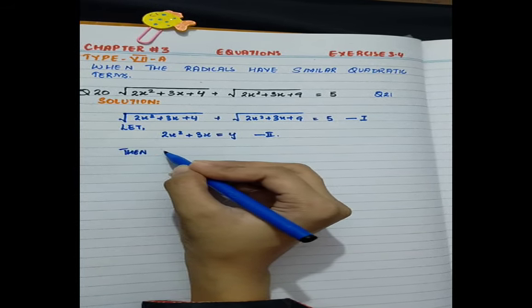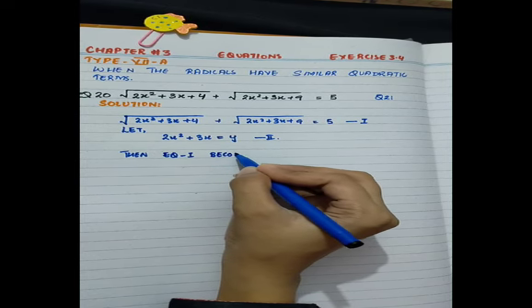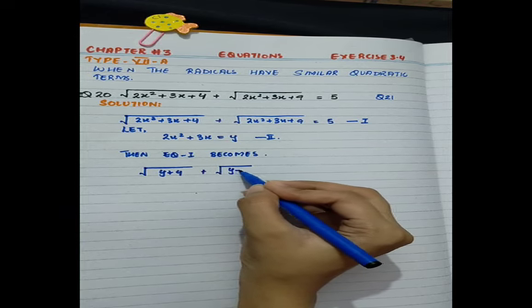Let the similar terms equal to y. Called equation number 2. Then equation becomes √(y+4) + √(y+9) = 5.